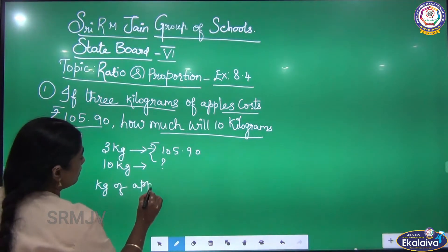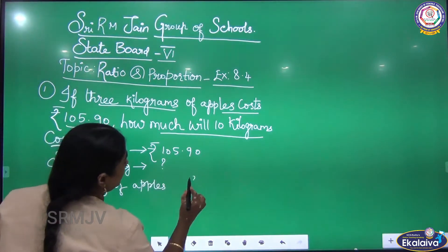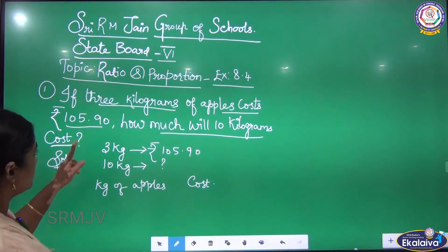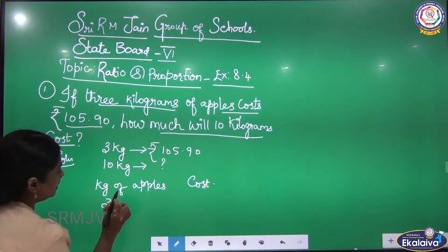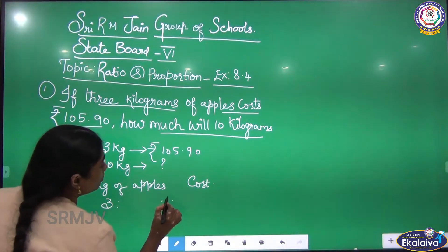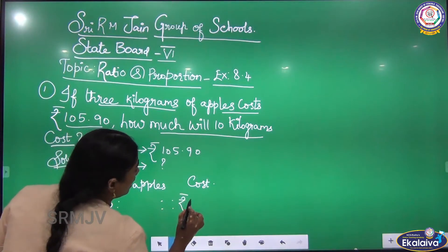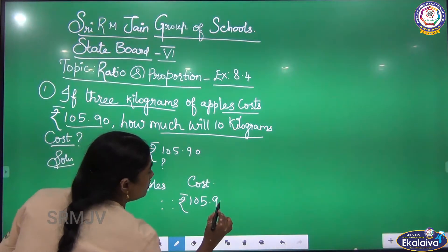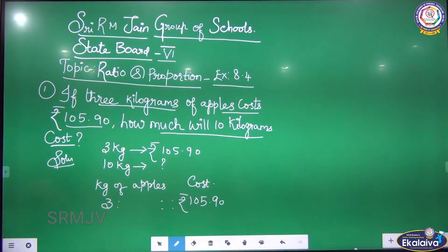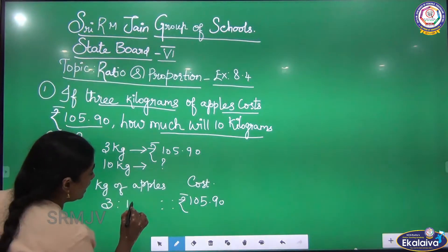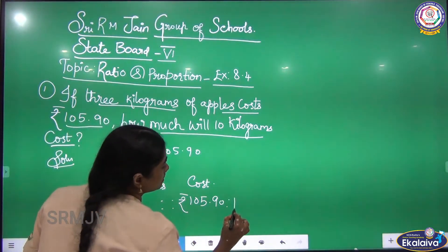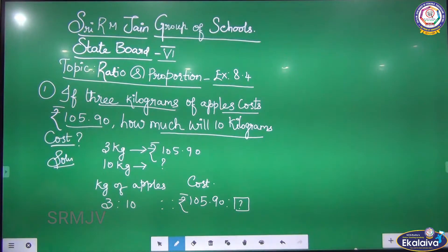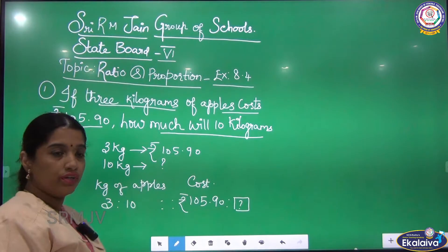See how I write this. Kilograms of apples and then cost. 3 kg is equal to 105 rupees 90 paise. And I am going to find out: 10 kg is how much cost? I am going to find that out.